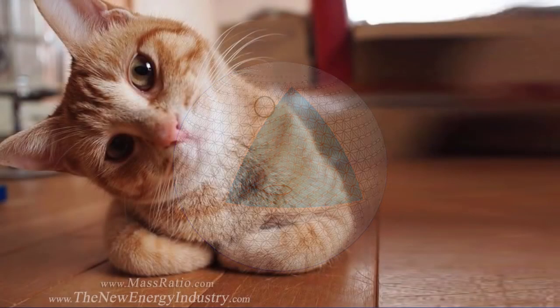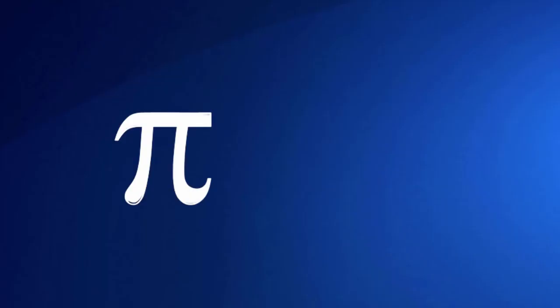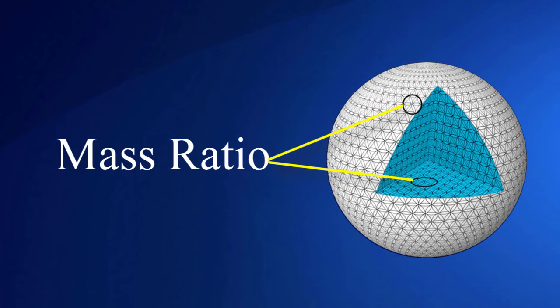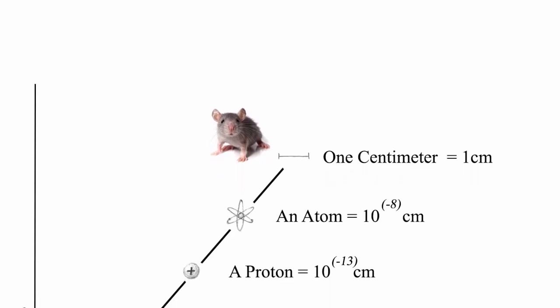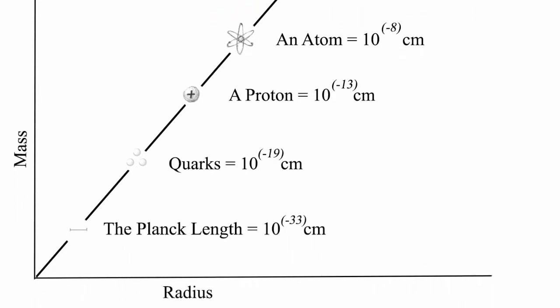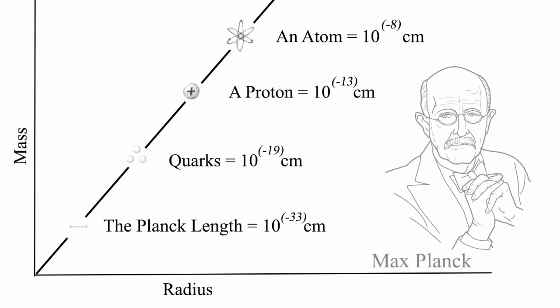Okay, cool. But I'm still wondering, what is the mass ratio? Well, you know how pi is the ratio between circumference to diameter? Well, the mass ratio is between surface area to volume. But to fully understand the beauty of the mass ratio, we must first look at the smallest thing in the entire universe, smaller than an atom, a proton, and even quarks, all the way down to the Planck length, 10 to the minus 33 centimeters, discovered by Nobel Prize winning physicist Max Planck.